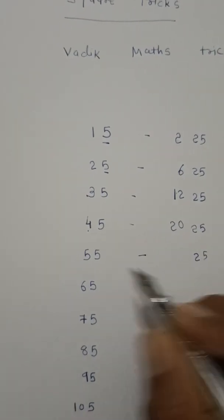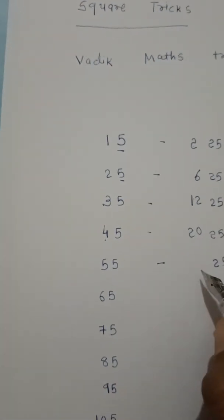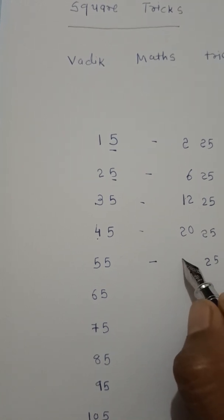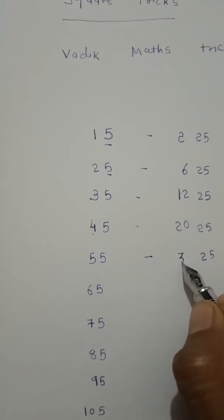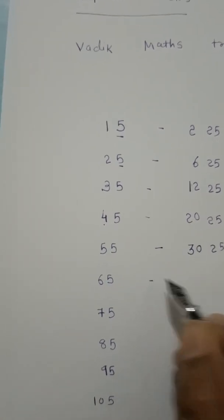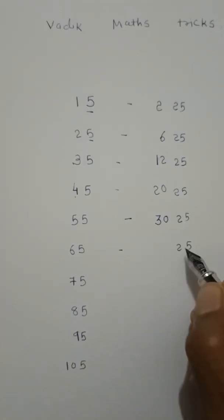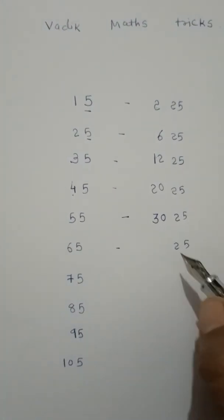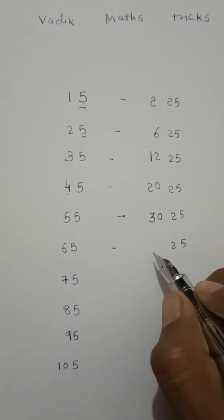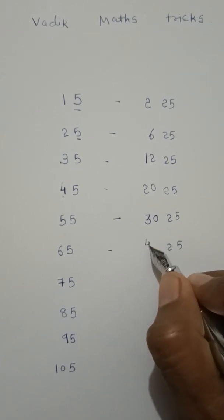25. Here the number is 5. Add 1: 6. So 5 into 6 is 30. Answer is 3025. 25. Here the number is 6. Add 1: 7. So 6 into 7 is 42. Answer is 4225.